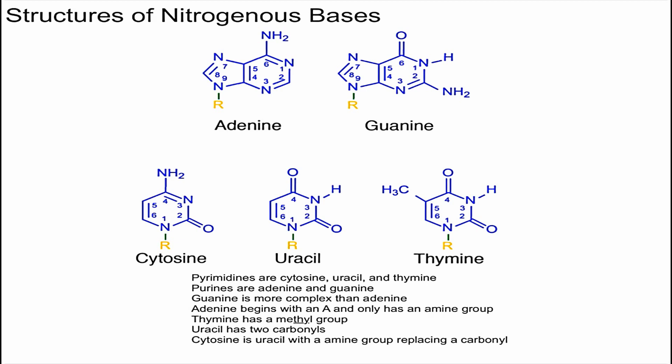Now let's look at the purines. For the purine numbering scheme, it starts at one and goes clockwise on the first ring, and then on the other ring it goes counterclockwise. Now let's talk about how to recognize the difference between the purines.